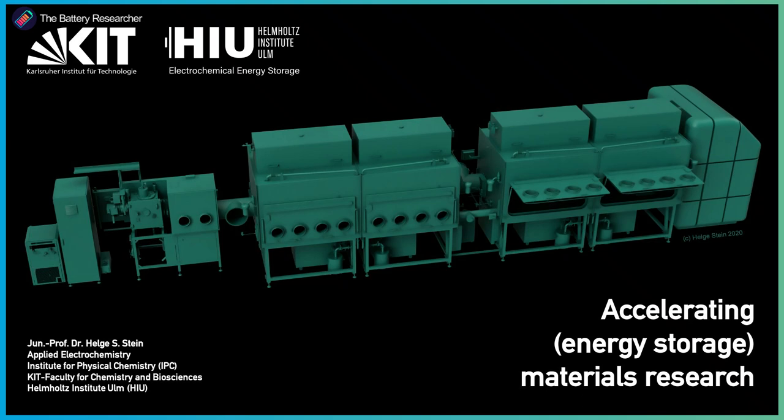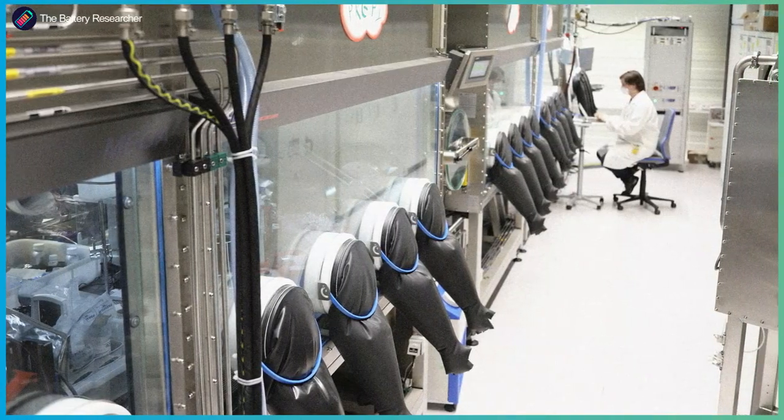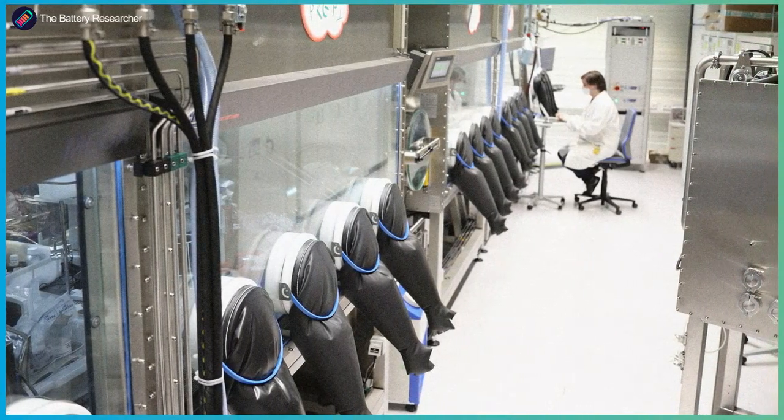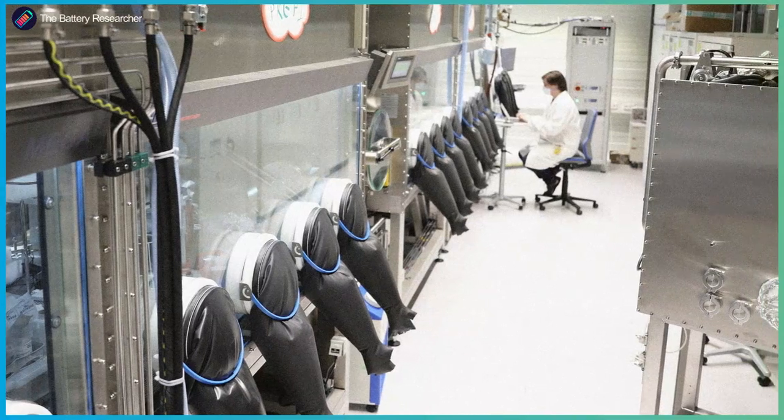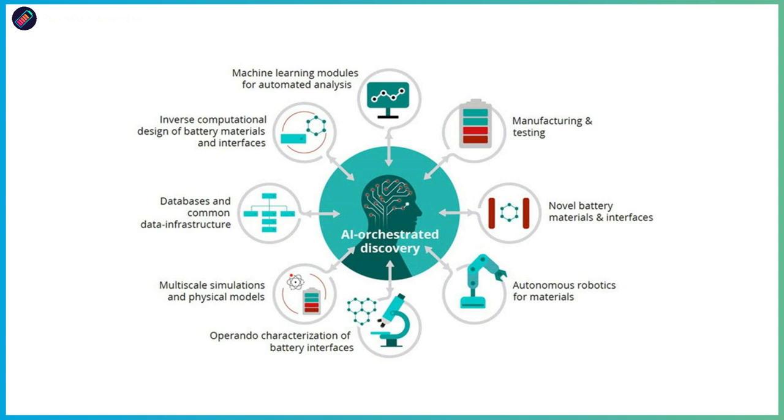And this is really what our materials acceleration platform tried to do for the first time. So we have what I call a localized experimental materials acceleration platform. That's PLACES-R, a platform for accelerated electrochemical energy storage research. And we try to integrate this platform, PLACES-R, into a bigger European project called BigMap. That's the Battery Interface Genome Materials Acceleration Platform. Essentially the same thing that we are trying to do here, but on a European scale.